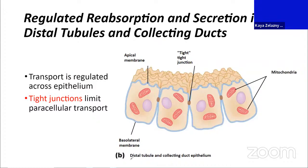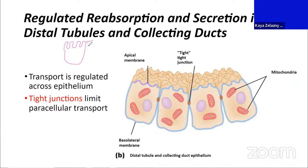We can see a couple of differences between the distal tubule and collecting duct epithelium versus what we saw in the proximal tubule. Because the proximal tubule was our mass reabsorber, one notable feature was the brush border—that apical membrane with lots of microvilli—giving us a large surface area to reabsorb tons of material. By the time we get to the distal tubule, we've done the bulk of reabsorption. The apical membrane has some projections, but it's not a brush border. We're not increasing the surface area to that degree because we're not trying to do as much reabsorption—it's a much more limited, controlled approach.